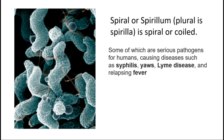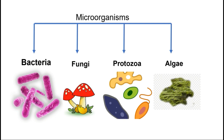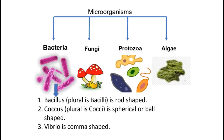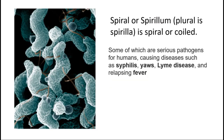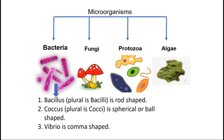So we have completed the topic of bacteria. To summarize: microorganisms are of four categories, and within bacteria there are four shape-based categories. Bacillus is rod-shaped, Coccus is spherical or ball-shaped, Vibrio is comma-shaped, and the fourth is spiral-shaped, just like a coil. Please make notes. In the next video we will cover fungi, protozoa, and algae, and after that we will discuss textbook questions. Thank you very much — stay strong, stay healthy!